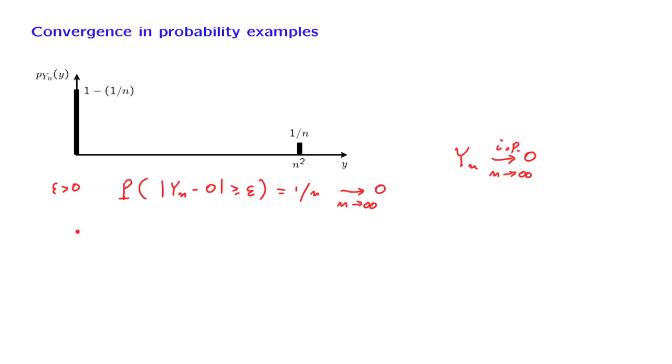Now, we make the following observation. If we are to calculate the expected value of this random variable, what we get is the following. We get the value of zero with this probability, no contribution to the expectation, but we also get a value of n squared with probability 1 over n. And so the expected value is equal to n, which actually goes to infinity as n goes to infinity.